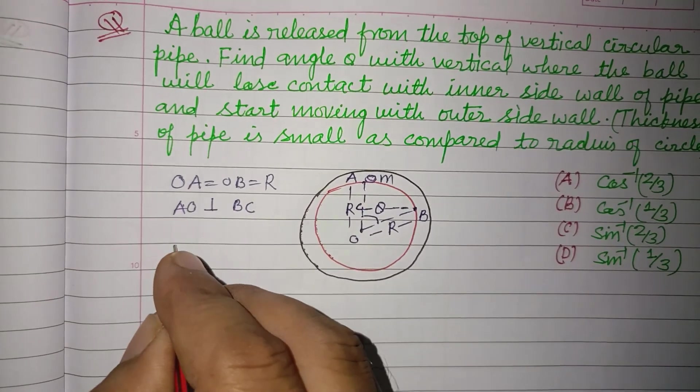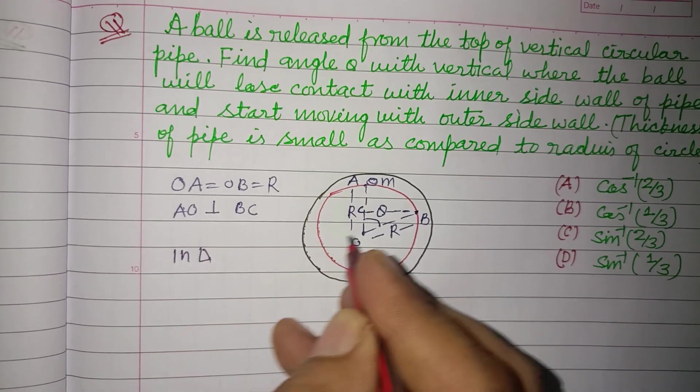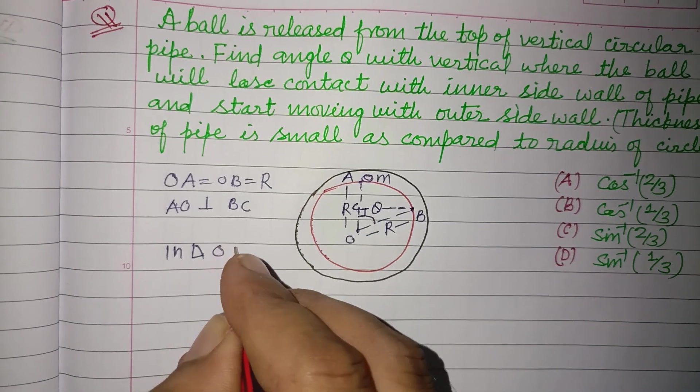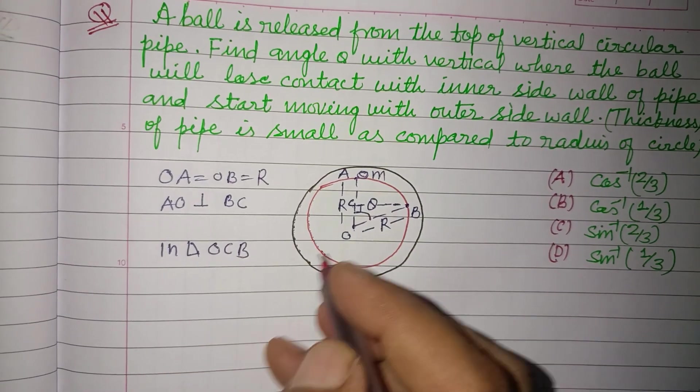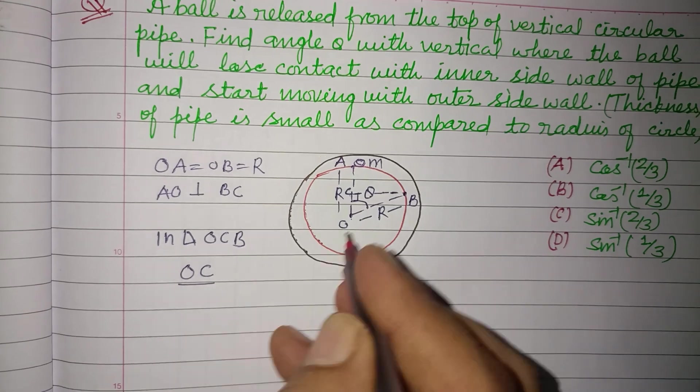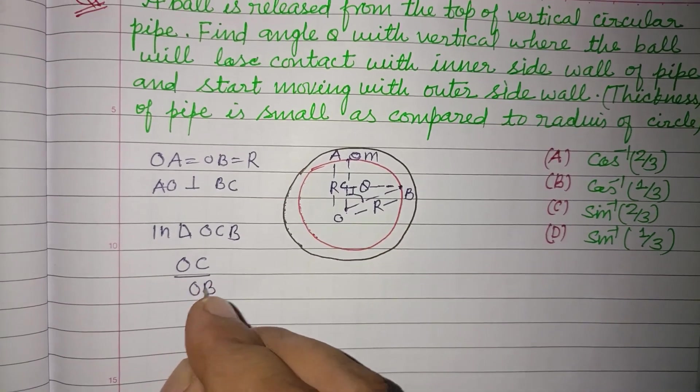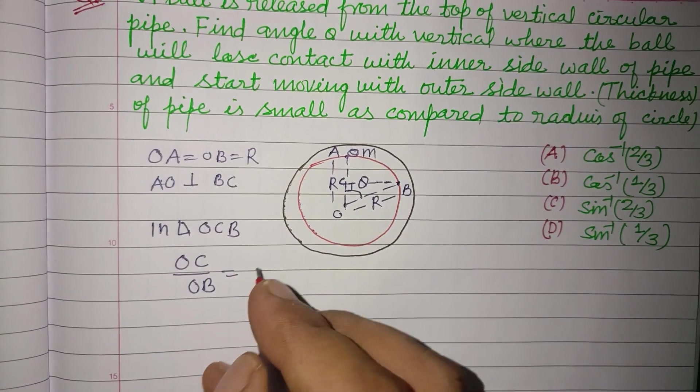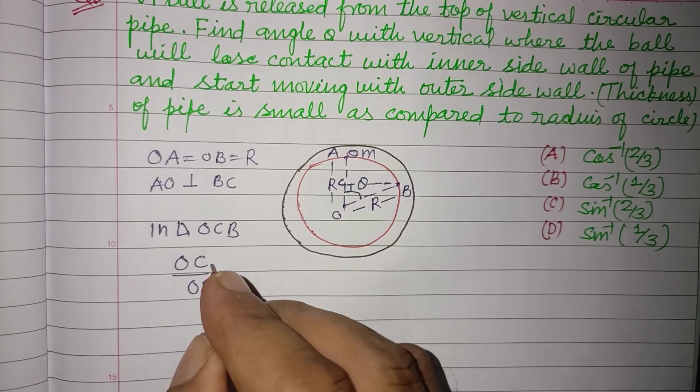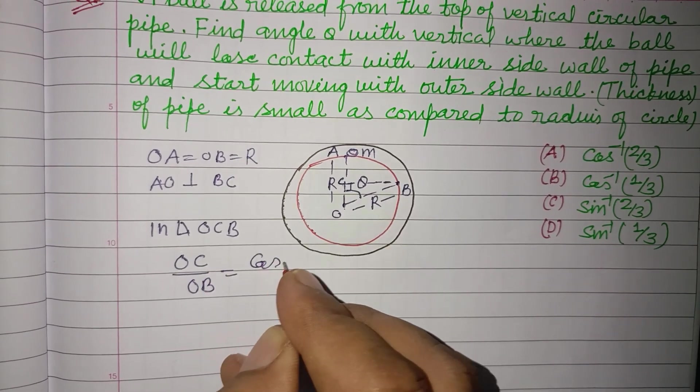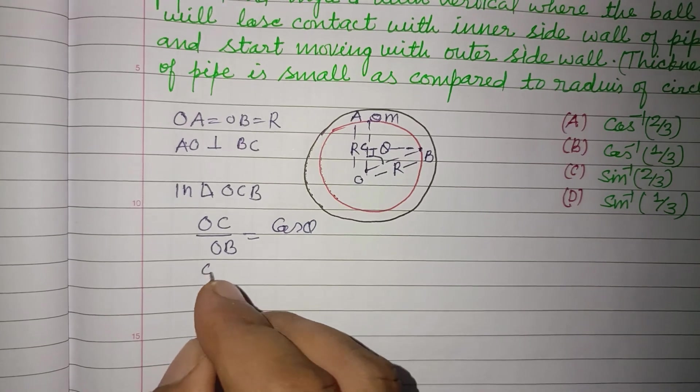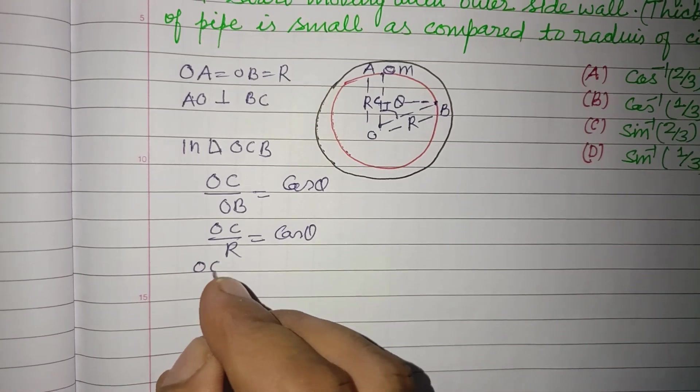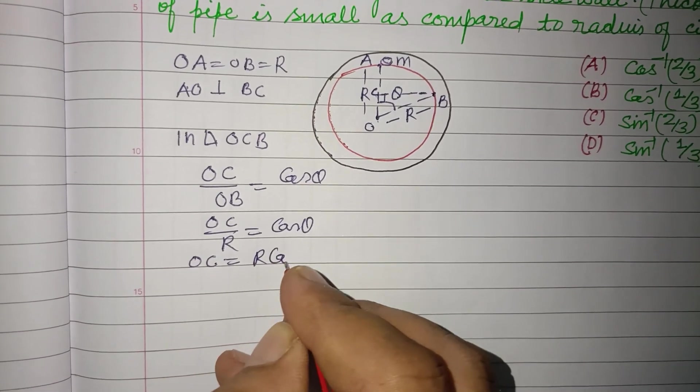In right angle triangle OCB, OC upon OB, this is base upon hypotenuse, which is cos theta. OB is R, so OC equals R cos theta. Therefore OC equal to R cos theta.